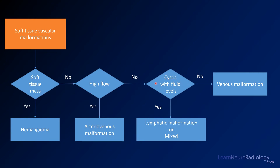Even though I show you this flowchart, you should remember this is really a spectrum of disease. In many cases, these are often mixed and can have multiple components. We refer to those as mixed malformations or venolymphatic malformations — you'll see a lot of different terminology. Just be aware that that exists.